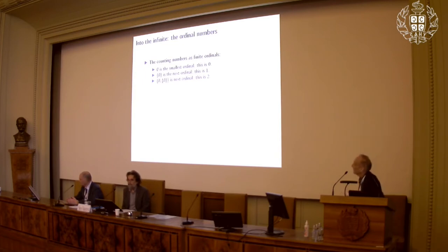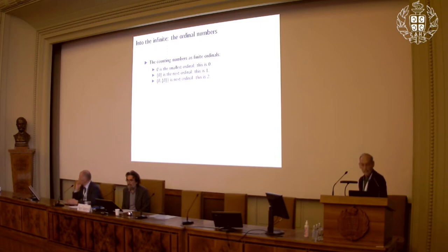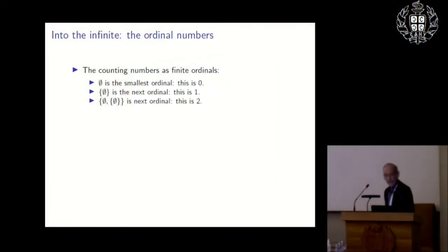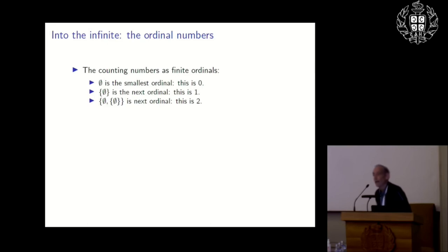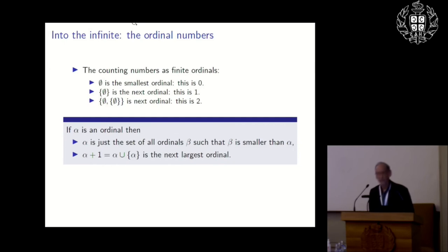Any study of the infinite begins with the ordinal numbers — those are a generalization of the counting numbers you all learned about. But in the universe of sets, everything is a set: zero is the empty set, one is the set whose only member is the empty set, and so forth. This defines the ordinal numbers, the transfinite generalization of the counting numbers.